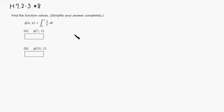Alright, so all you really have to do is plug in 7 for x and 1 for y. So this is going to be equal to integral from 7 to 1 of 1 over t dt. Alright, then antiderivative of 1 over t is natural log of absolute value of t.